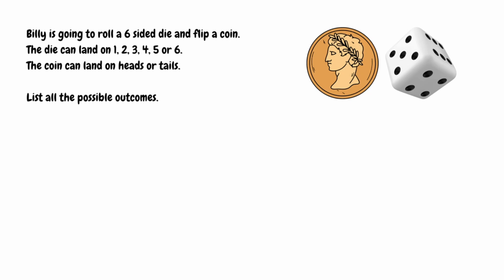We need to list all the possible outcomes. The way we're going to do this systematically is to start with the coin landing on heads, and then note down all the possible outcomes for the roll of the die. So our first outcome would be heads and 1, then keeping heads the same: heads with 2, heads with 3, heads with 4, heads with 5, and heads with 6.